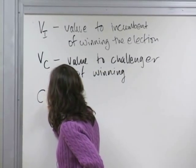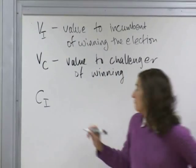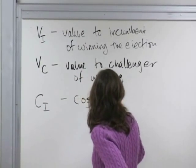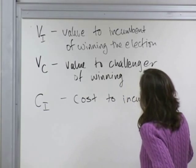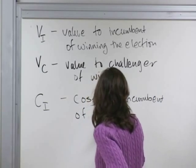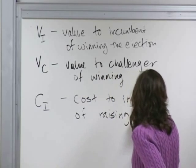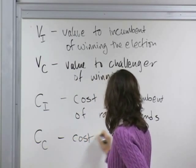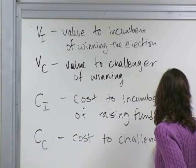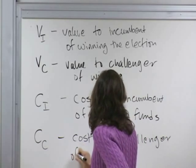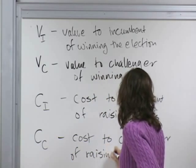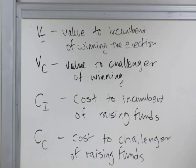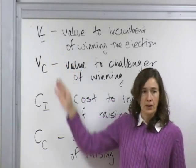Beyond the value of winning, I also need to think about the costs of raising funds. C sub I is the cost to the incumbent of raising funds, and C sub C is the cost to the challenger of raising funds. So what I'm doing is a more general form of the table I put up about a week and a half ago with payoffs involving ten, eight, three, and one. These variable payoffs are my new assumptions about preferences—less assumptions now than definitions.